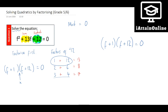The question asked us to solve the equation, and that means find out what values f could be. Because it's a quadratic, it will have two solutions — they might sometimes be the same, which we call a repeated root. Remember there is an invisible times between the brackets, so to get an answer of zero when multiplying two things together, one of those numbers has to equal zero. That means either (f + 1) = 0 or (f + 12) = 0.